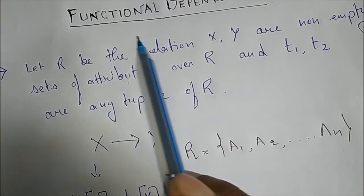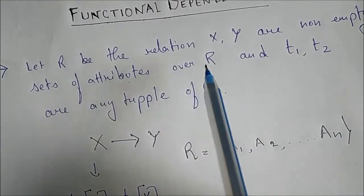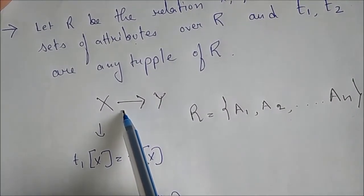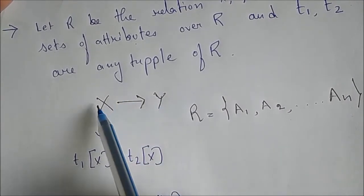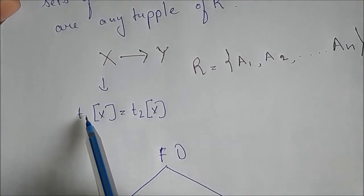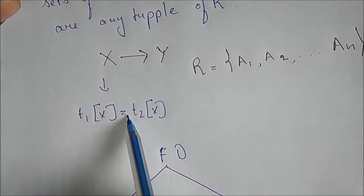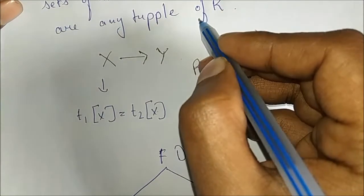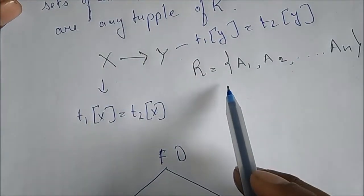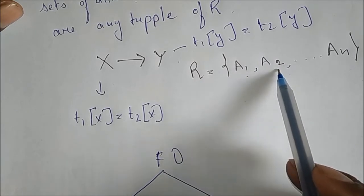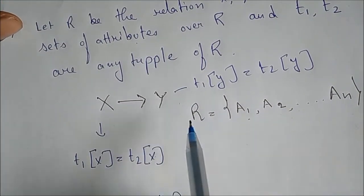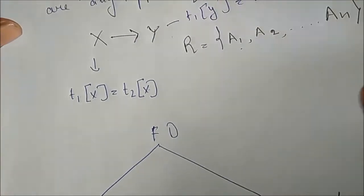Let R be the relation. R is the relation and X, Y are the non-empty sets of attributes over R, and T1 and T2 are the tuples of R. X is the Functional Dependency of Y. X and Y are two non-empty sets. There is one condition that should be satisfied: tuple T1 of X set should be equal to tuple T2 of X set, and similarly in Y also, tuple T1 of Y set should be equal to tuple T2 of Y set. R contains the attributes A1, A2 up to AN — the attributes which we are depending on.